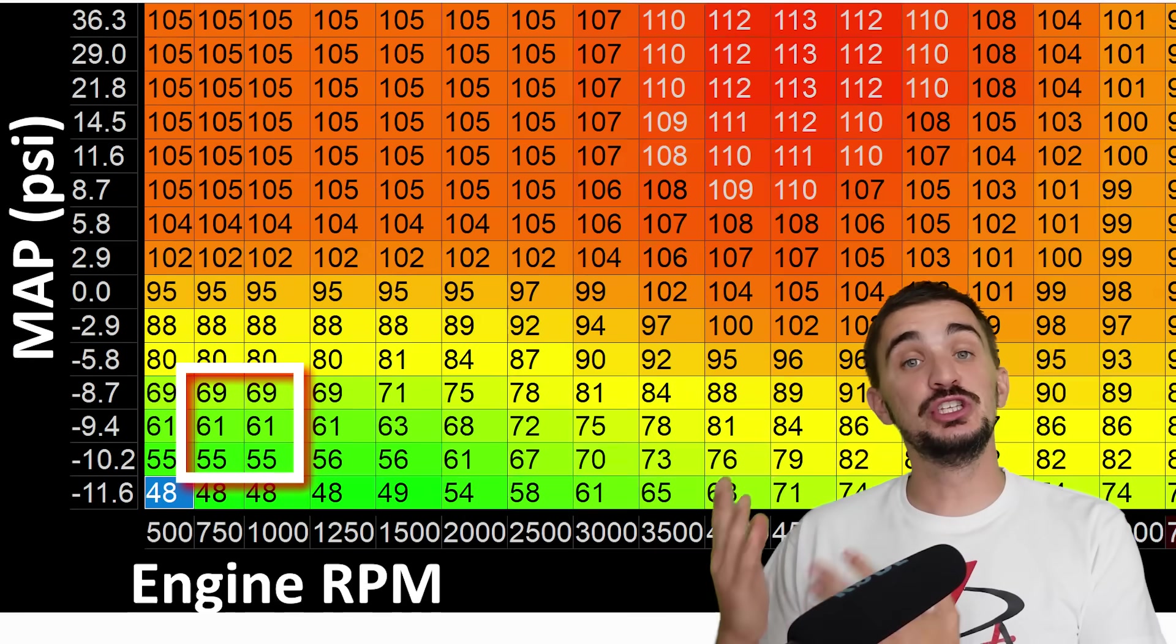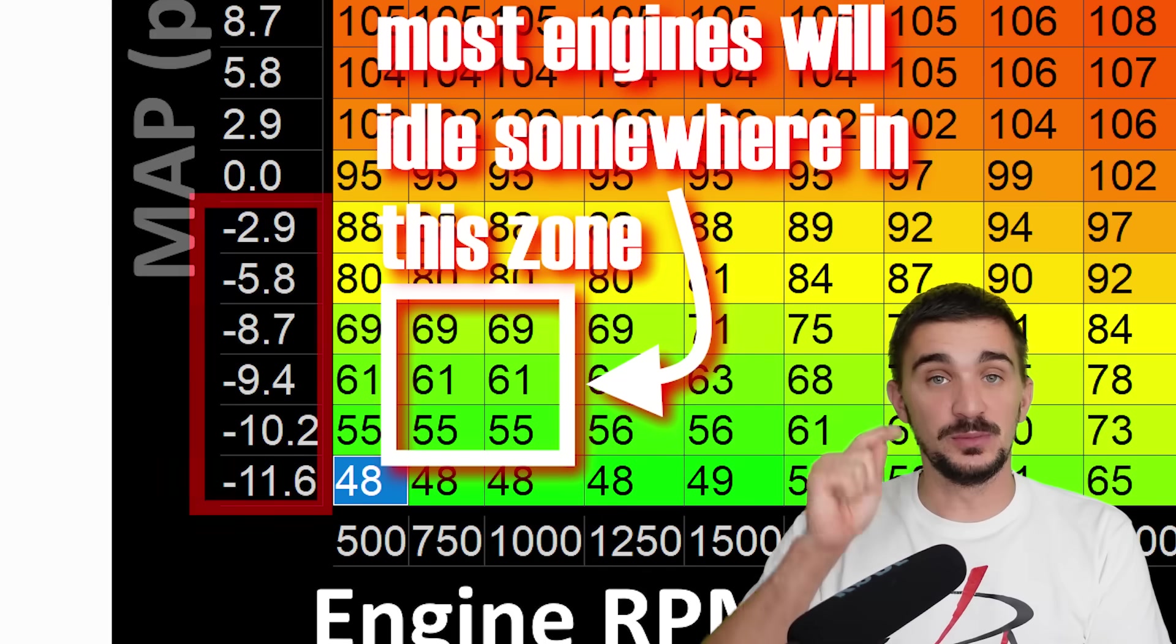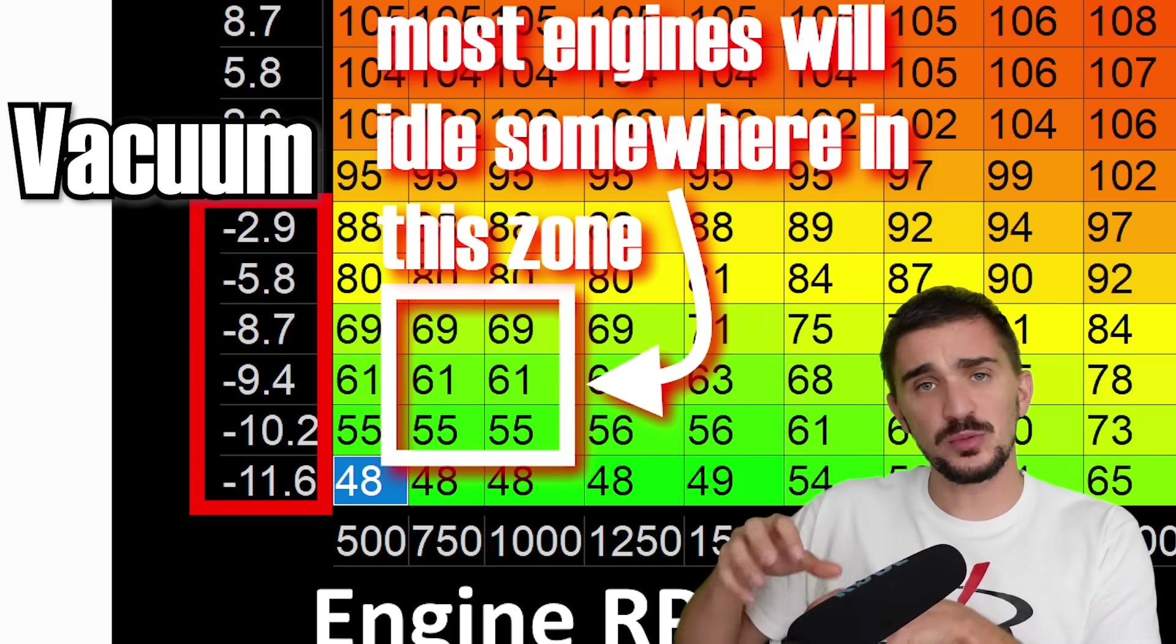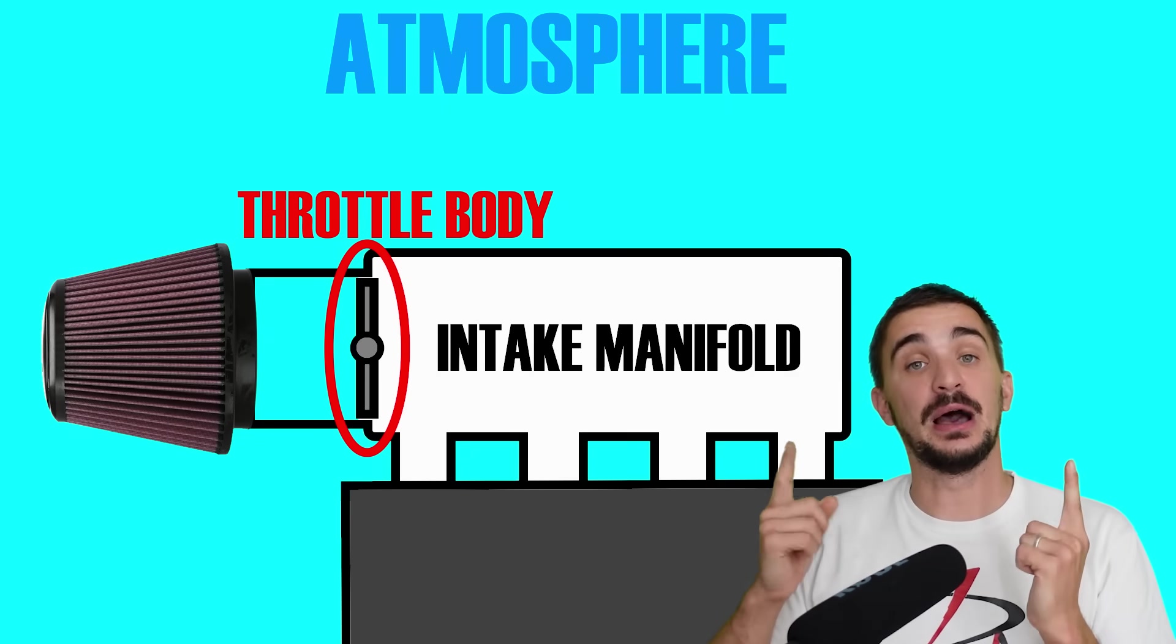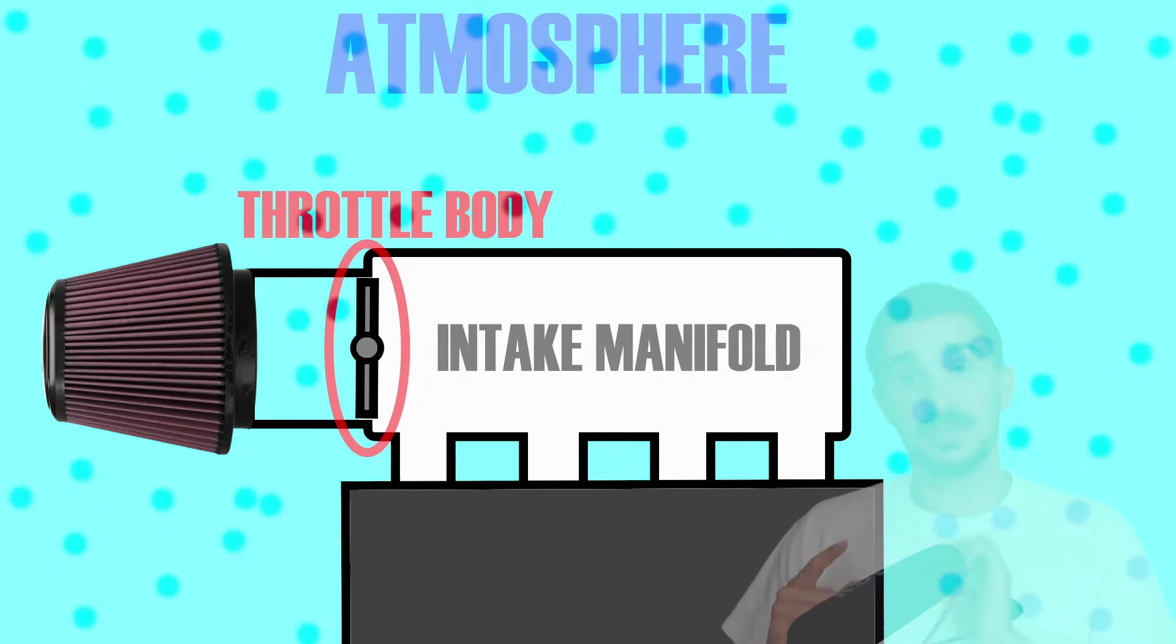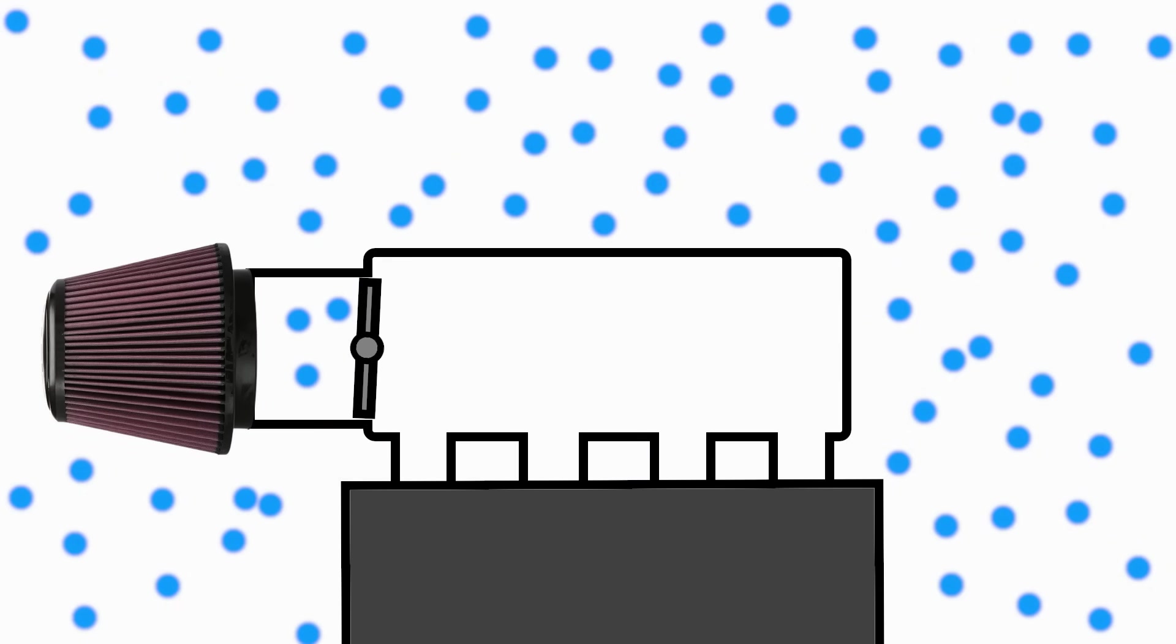Now at idle and other reduced load scenarios, we have vacuum inside the engine. In other words, the air pressure inside the intake manifold is lower than the air pressure in the atmosphere outside the engine. This occurs because the throttle plate is almost fully closed, and it's only letting in tiny little amounts of air into the intake manifold.